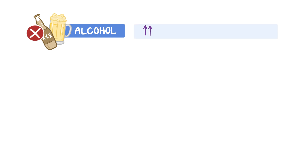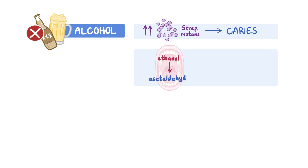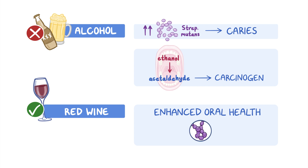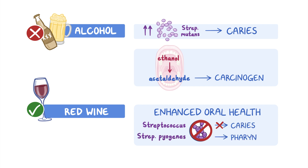Alcohol can lead to an increase in gram-positive bacteria, such as Streptococcus mutans, which can lead to dental caries. Also, oral bacteria convert ethanol to acetaldehyde, which is a carcinogen. However, moderate consumption of red wine may enhance oral health, because it contains a mixture of organic acids that are active against oral Streptococci, responsible for caries development, and Streptococcus pyogenes, responsible for pharyngitis.